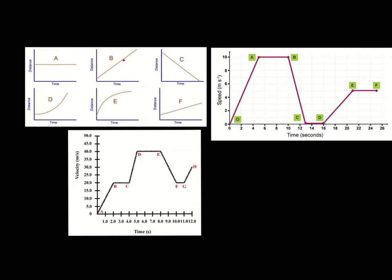On graph D, similar to B, distance is increasing as time goes on, but not very much at first — then as time goes on, distance starts to increase at a steeper gradient. So this is probably someone walking away from us and then running away from us. On graph B, the person is running away — perhaps sprinting — then slows to a jog or walk, and the distance doesn't increase as fast over time. Graph F shows the same as B, but the person doesn't have as much velocity — the gradient is less steep.